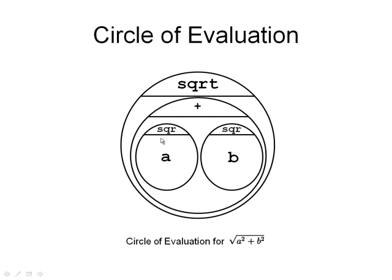Now here's a scary looking circle of evaluation, but once we break it down, it's actually very straightforward. First we go to the innermost circle, and we find that we have an operator called square, and its operand is a. So the value of this circle is a squared. Similarly, this circle of evaluation is the square of b, so this circle computes b squared.